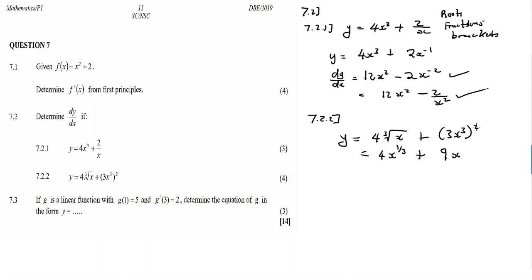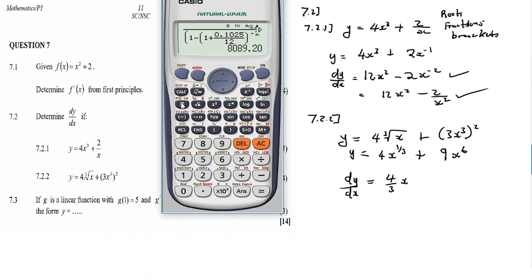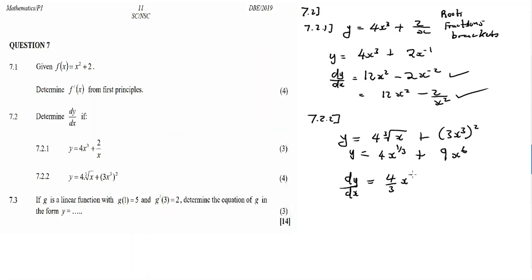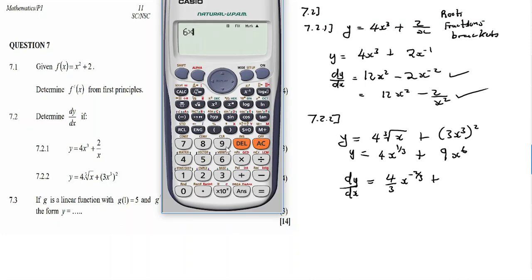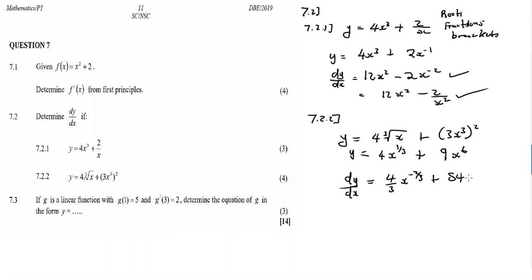For 7.2.2, Lana, you can also write your answer this way, it doesn't matter. So it's still fine as well. 7.2.2, y equal to 4 third root x plus 3x cubed and a squared outside. So therefore Lana, we have a bracket and a root. So we have to simplify roots and brackets. So it's x to the one over three. Plus, for the root, for the third root, give 1 over 3. And then for 3 squared is 9, x 3 times 2, so you have 6.